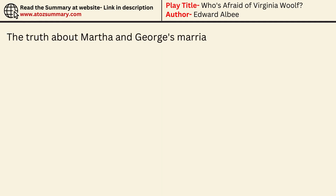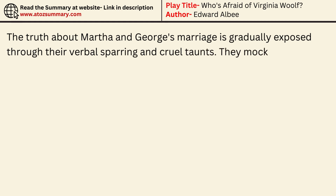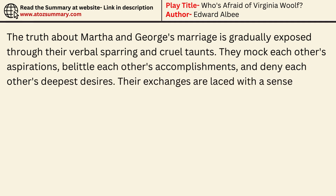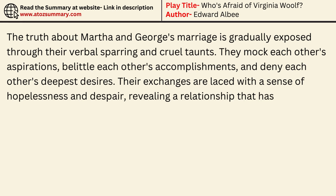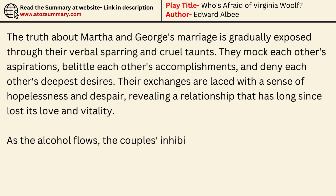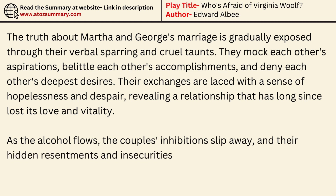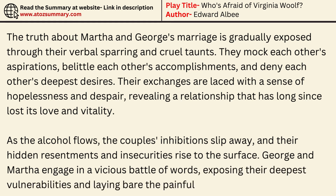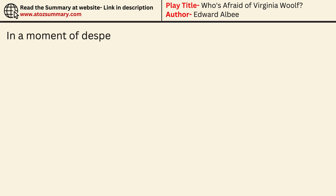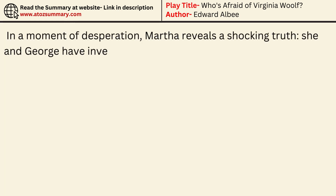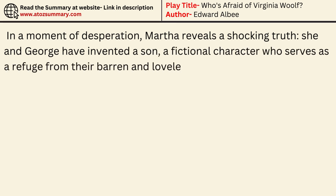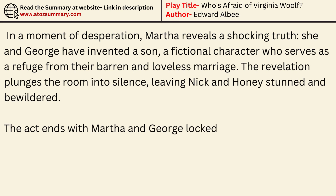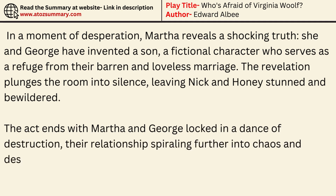The truth about Martha and George's marriage is gradually exposed through their verbal sparring and cruel taunts. They mock each other's aspirations, belittle each other's accomplishments, and deny each other's deepest desires. Their exchanges are laced with a sense of hopelessness and despair, revealing a relationship that has long since lost its love and vitality. As the alcohol flows, the couple's inhibitions slip away and their hidden resentments rise to the surface. In a moment of desperation, Martha reveals a shocking truth — she and George have invented a son, a fictional character who serves as a refuge from their barren and loveless marriage. The revelation plunges the room into silence, leaving Nick and Honey stunned and bewildered. The act ends with Martha and George locked in a dance of destruction, their relationship spiraling further into chaos and despair.